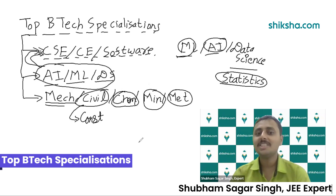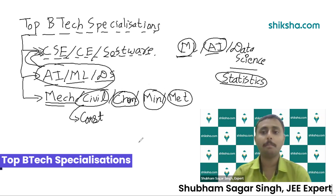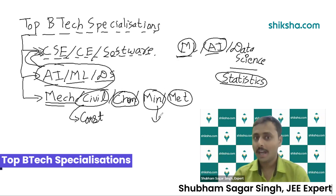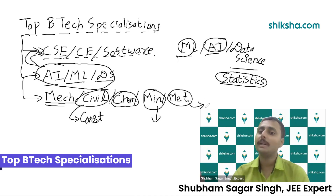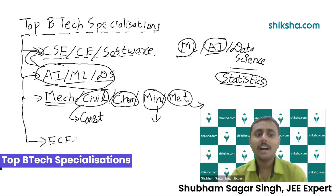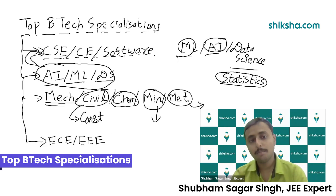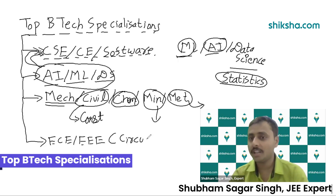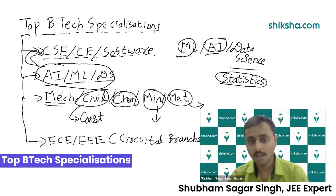Then there is Mining and Metallurgy. These are self-explanatory: Mining covers how you extract coal or iron ore from mines, and Metallurgy is when you transform that extracted metal into a useful form. There is also another underrated branch which is ECE and EEE — basically electronics or electrical engineering. There are various names, but I call these the circuital branches.